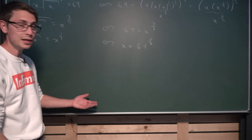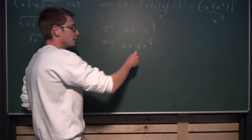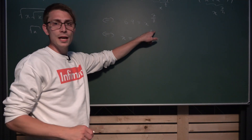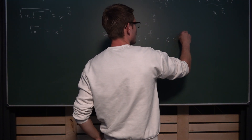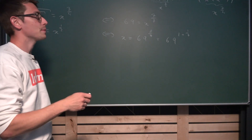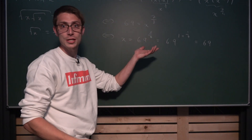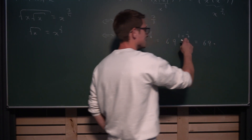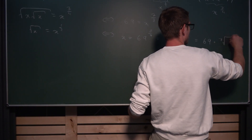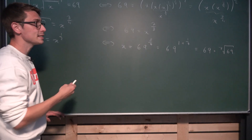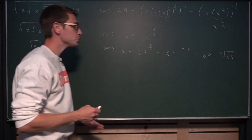Which is certainly something. I would like to rewrite this a tiny bit more — this is going to become important later. You'll notice that 8 over 7 is the same as 1 and 1 seventh, so this is the same as 69 to the 1 plus 1 over 7. Breaking this up using exponentiation rules, we get 69 to the 1st power — which is just 69 — times 69 to the 1 seventh, which by definition is the 7th root of 69. So the cool thing is that we preserve our 69 and multiply it by the 7th root of 69.